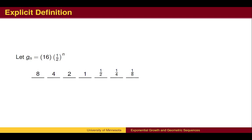The explicit formula will require us to count the repeated multiplication with an exponent. To get the first term, we plug the value 1 in for n to get 16 times 1 half, which is 8.